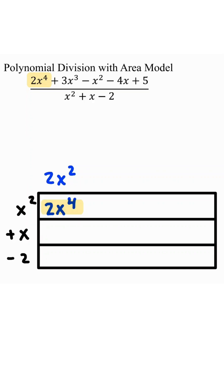Fill up the other two rows. x times 2x squared gives you 2x cubed, negative 2 times 2x squared gives you negative 4x squared. Since we fill up the rows, let's section it off.